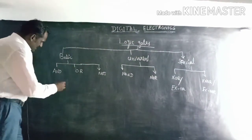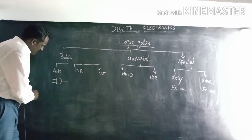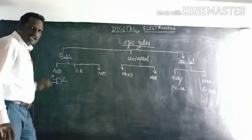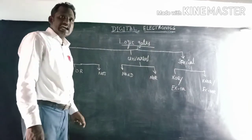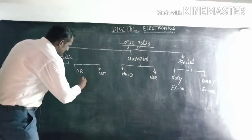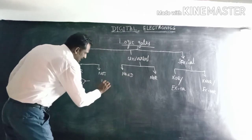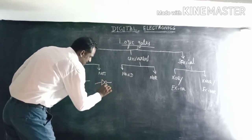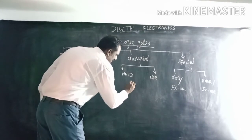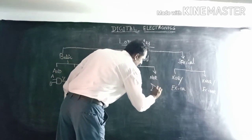Now we can see the logical symbol of the AND gate — let A and B be the inputs and Y be the output. It is not necessary to use A, B, and Y; you can name any alphabets. The symbol of the OR gate has a bubble, and the NAND gate is an AND gate followed by a bubble; the NOR gate is an OR gate followed by a bubble.